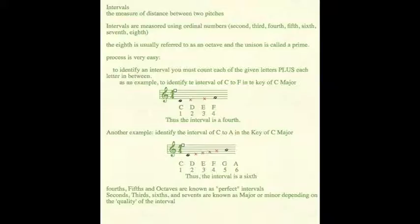Intervals are measured using ordinal numbers, such as second, third, fourth, fifth, sixth. The eighth is usually referred to as an octave, and the unison is called a prime.